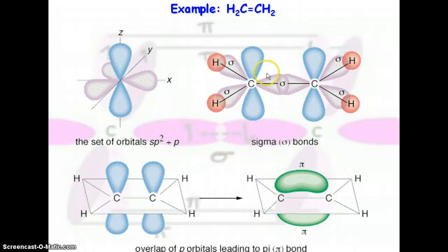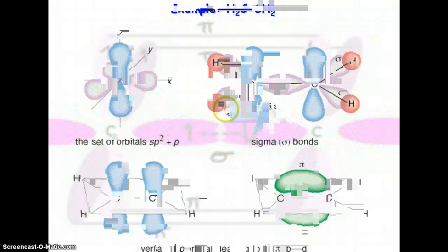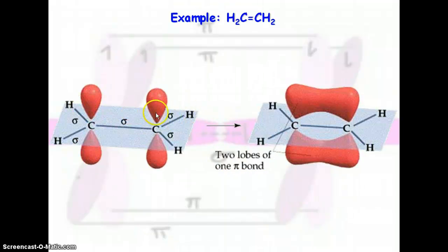So we have a sigma bond and a pi bond occurring between the carbons. Carbon is sigma bonding with each hydrogen — that's two sigma bonds — and also sigma bonding with the other carbon as well as pi bonding with the other carbon. The two unhybridized p orbitals hybridize into a pi bonding orbital above and below.